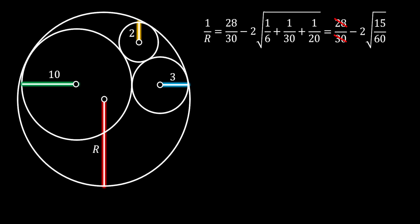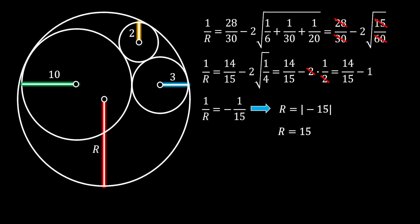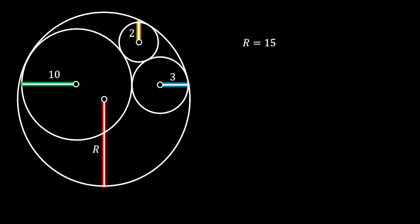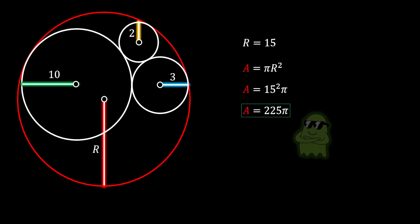We simplify the things underneath the square root — the first fraction simplifies with 2 and the second with 15. Then we take the square root of one-fourth and simplify to get 14 over 15 minus 1. This means the reciprocal value of our radius is equal to negative 1 over 15, which means the radius is negative 15. Taking the absolute value since this applies to inner tangency, the radius of our big circle is equal to 15. It's then easy to find the area as π r² = 225π square units, and this is our solution.